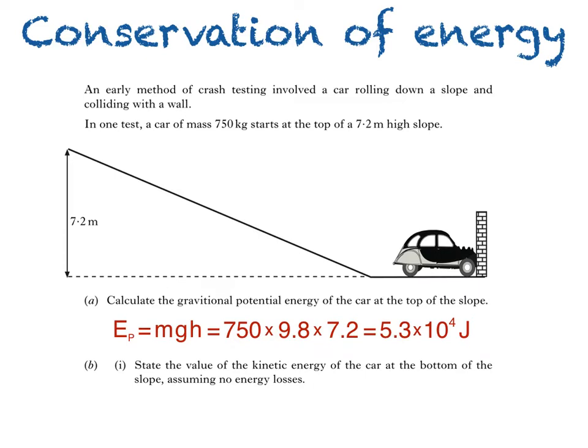So, to cut a long story short, assuming no energy losses, the kinetic energy of the car at the bottom of the slope would also be 5.3 times 10 to the power of 4 joules.